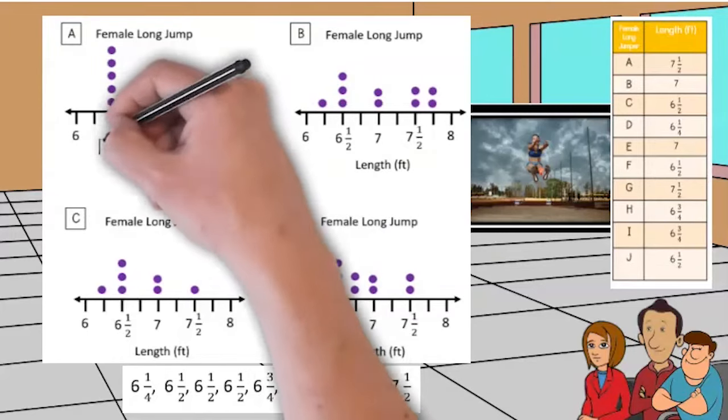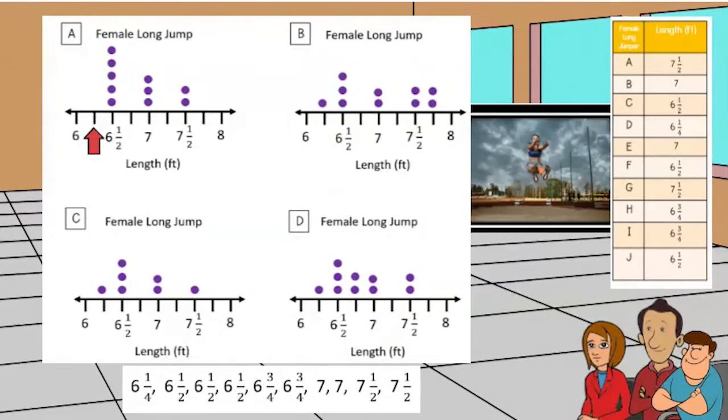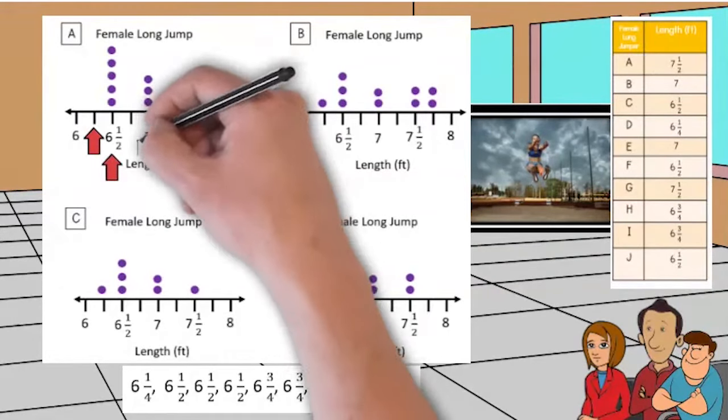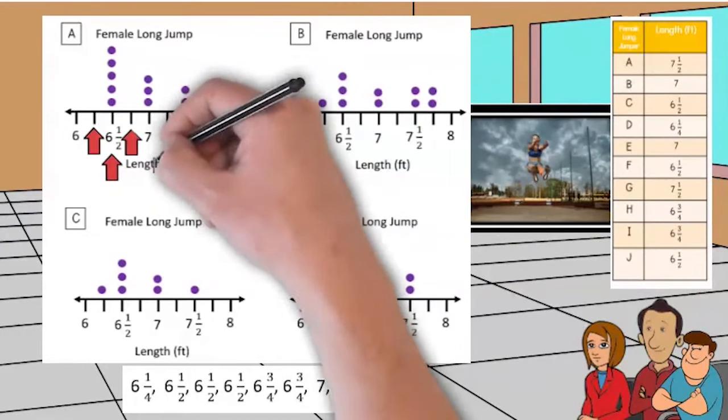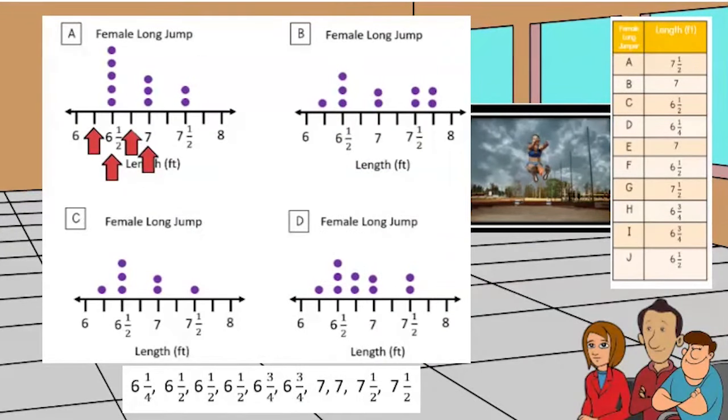For example, the first tick after the six is six and one fourth. The second tick is six and two fourths or one half. The third tick represents six and three fourths. The next tick is seven. Now the numbers are in order.